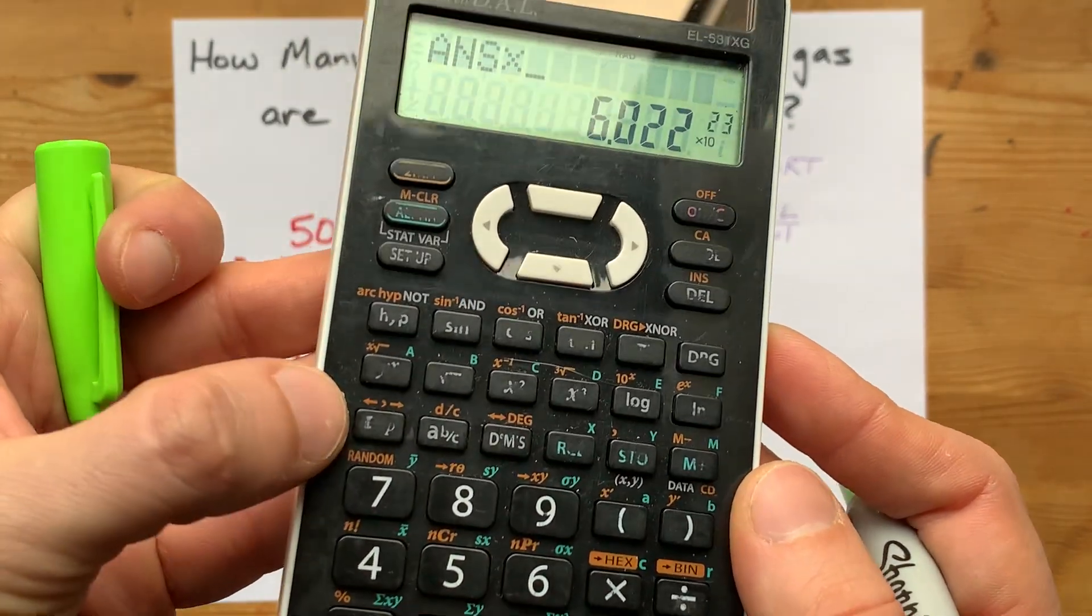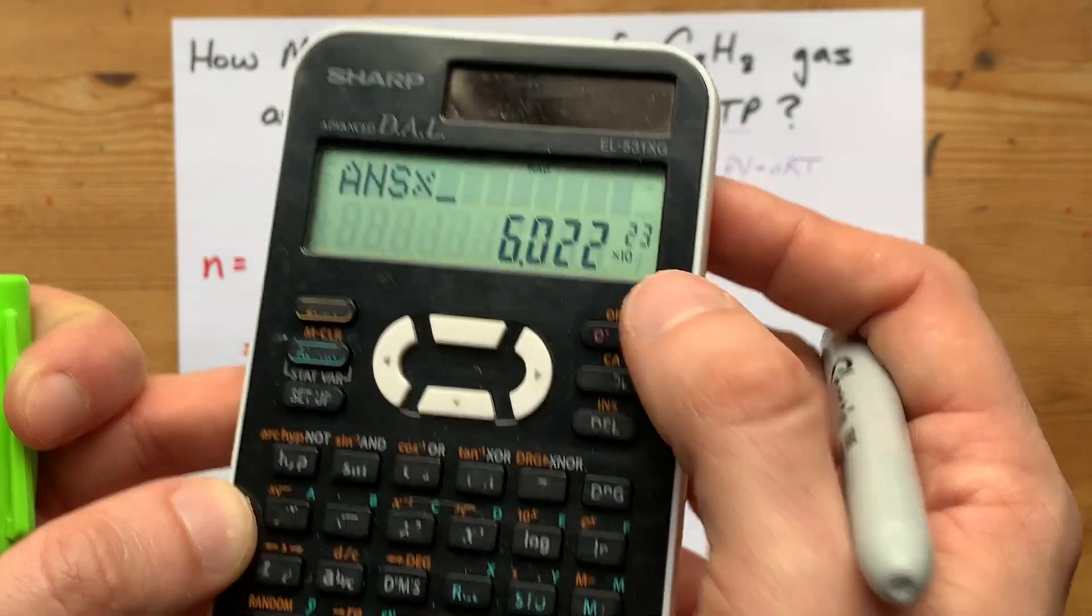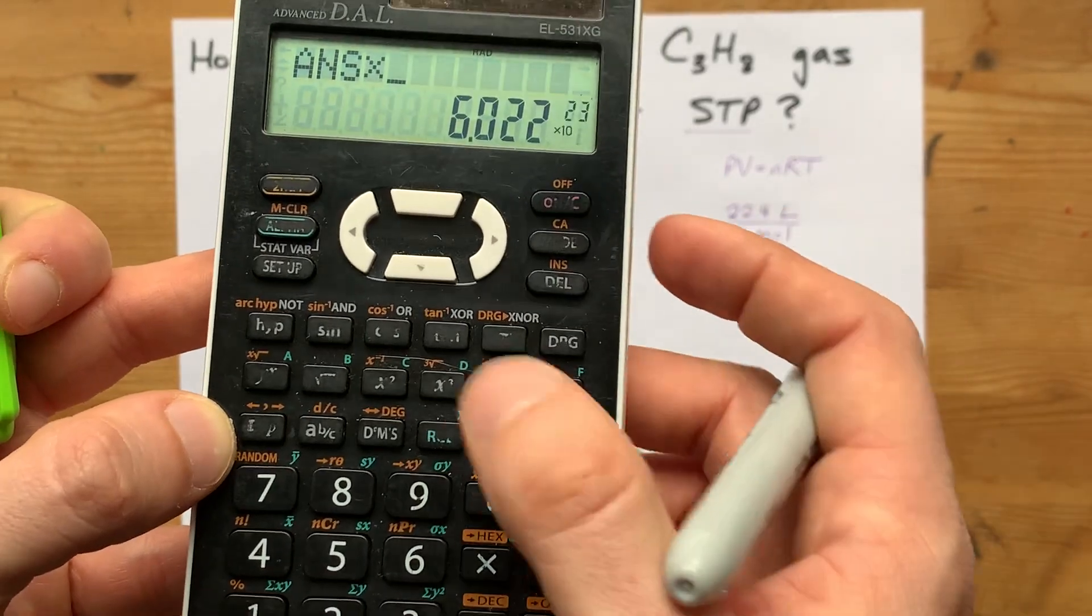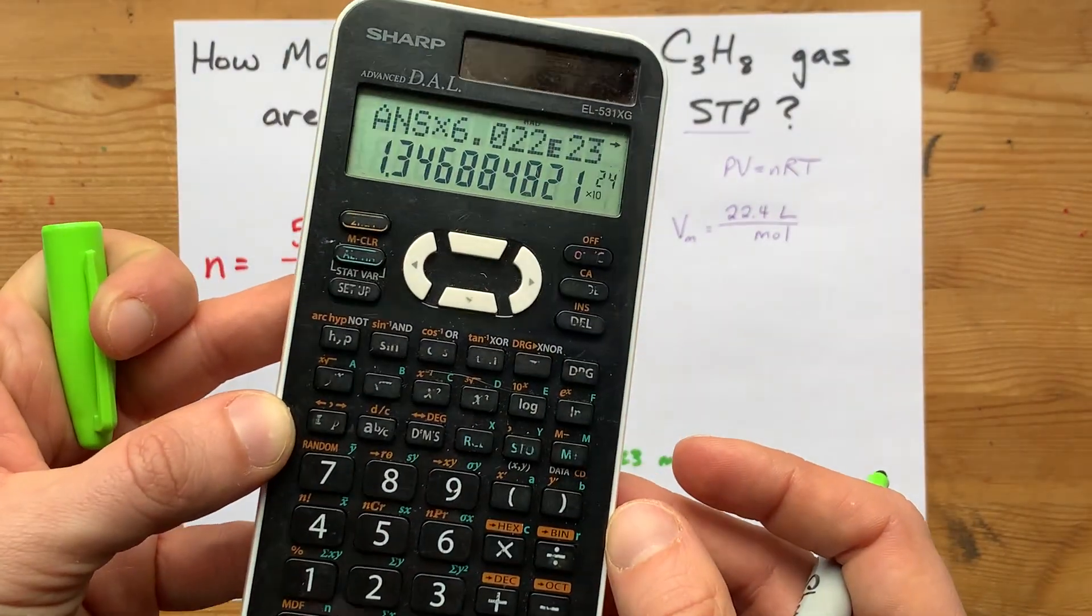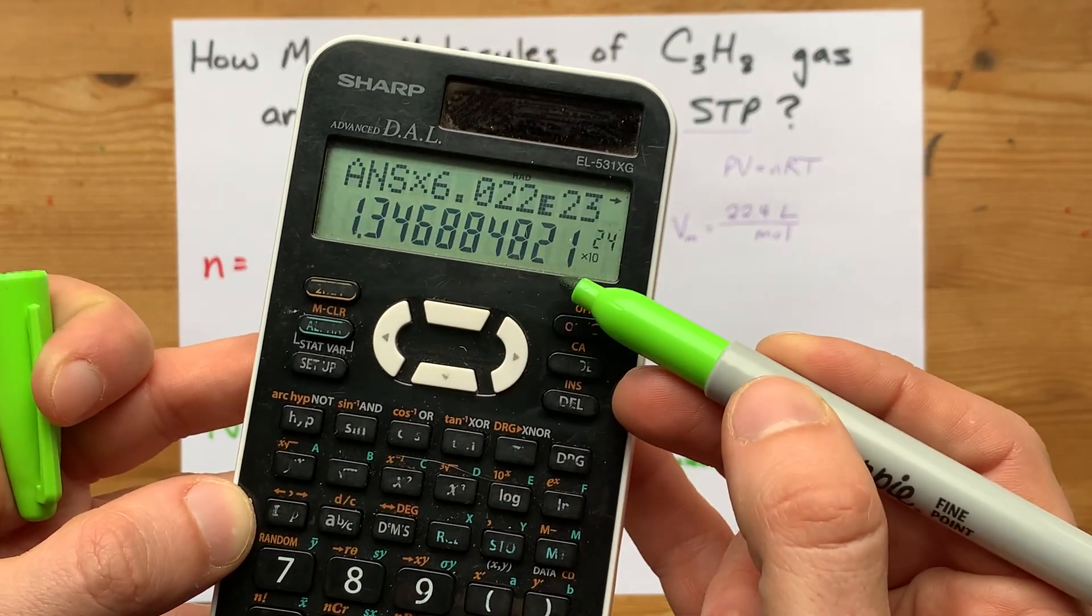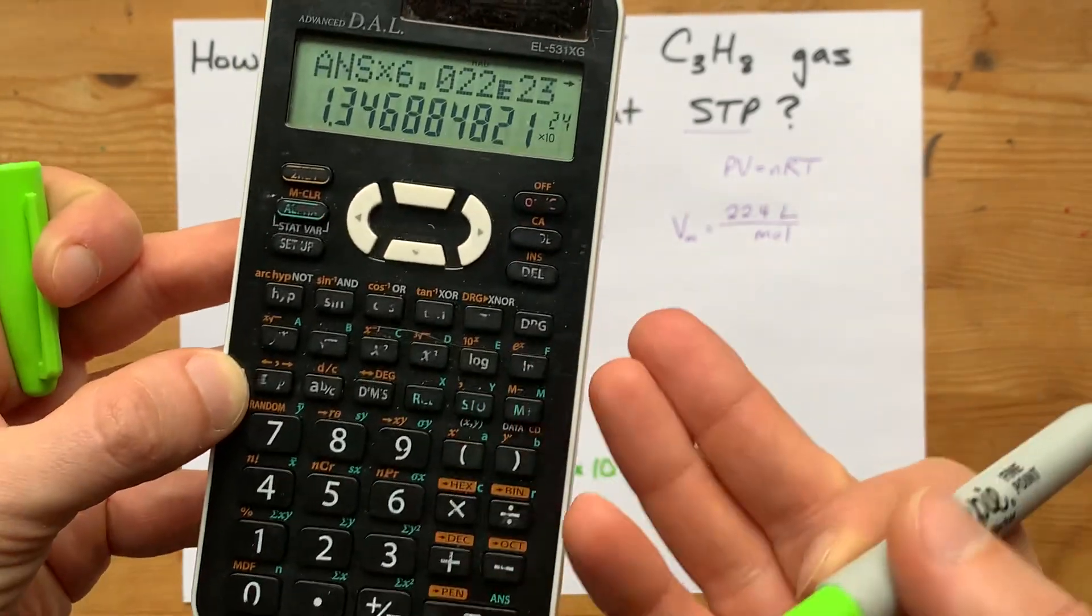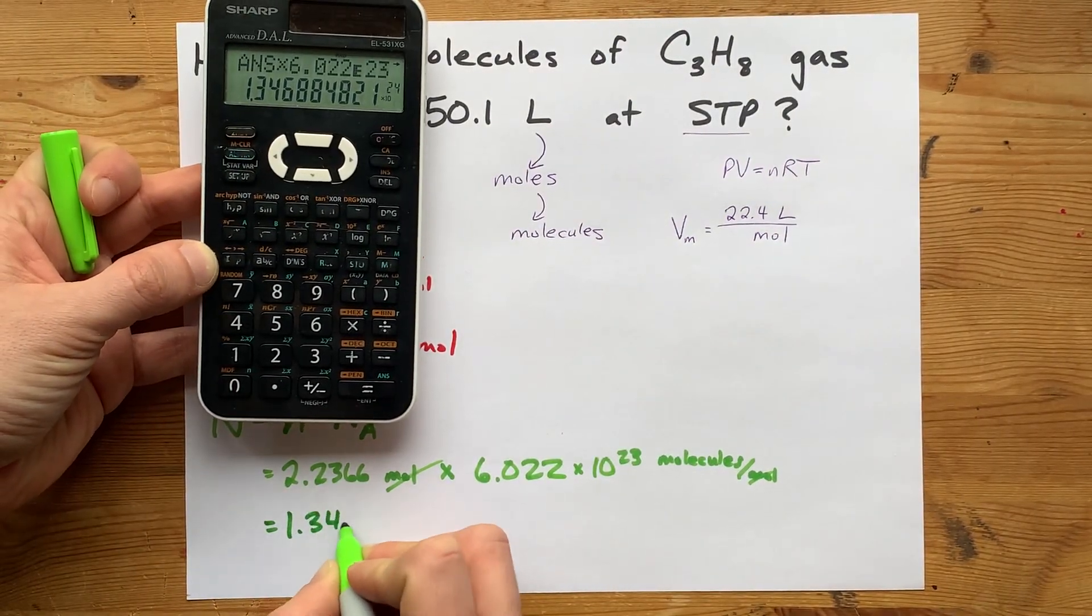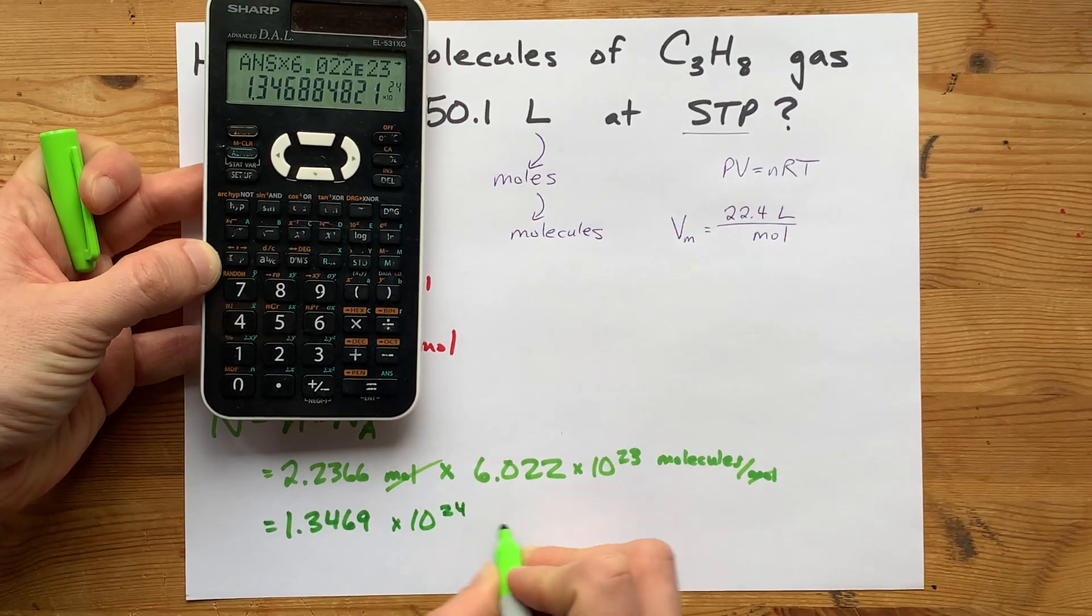Now, I'm using a button on my calculator called EXP, which gives me the times 10 to the power of. Your calculator might say EE, or it actually might say times 10 to the power of. Just make sure that when you do your calculation, you get 1.34 something times 10 to the 24. If you're off, then you're typing something into the calculator wrong.